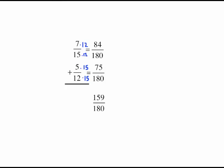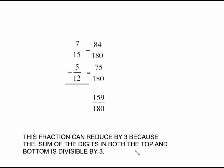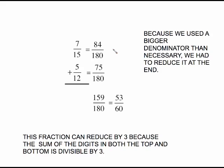Because 159 doesn't appear like it has any factors, but it does. There's a little rule that's worth remembering and that is the three rule. This fraction can be reduced by three because the sum of the digits in both the top and the bottom is divisible by three. What do I mean by the sum of the digits? If you add 1 plus 5 plus 9, you get 15. 3 divides evenly into 15. That tells me I can divide the top by 3. Do the same thing on the bottom. 1 plus 8 plus 0 is 9. 3 goes into 9. So I know I can divide this on the bottom by 3. And that's going to give me a final answer of 53 over 60. Because we use a bigger denominator than necessary, we had to do some reducing at the end. Sometimes you have to reduce at the end regardless. But pretty much automatically, if you use a bigger denominator than necessary, you are going to have to reduce your fraction at the end.